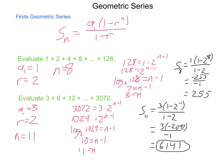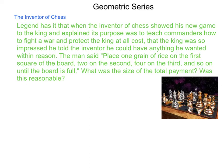As we work with these, application becomes a big part. Let's look at an application from history. Legend has it that when the inventor of chess showed his new game to the king and explained its purpose was to teach commanders how to fight a war and protect the king at all costs, the king was so impressed he told the inventor he could have anything within reason. The man said, place one grain of rice on the first square of the board, two on the second, four on the third, and so on, until the board is full.